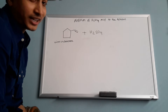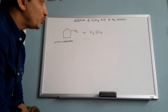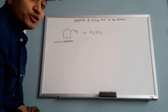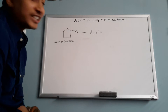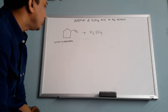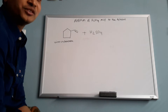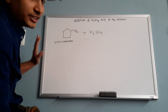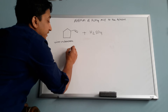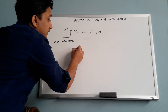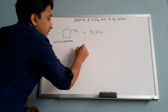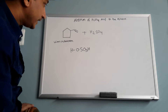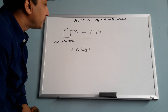If you want to do the mechanism and you write sulfuric acid in its condensed form, how can we show the mechanism? In the mechanism we want to see everything — the dots, how it is attacking, how it is reacting. So you want to draw sulfuric acid nicely.